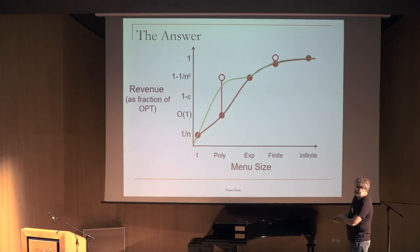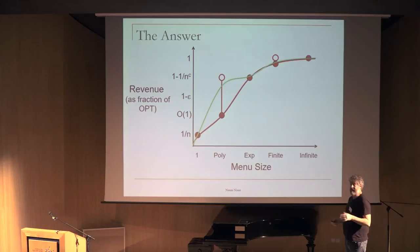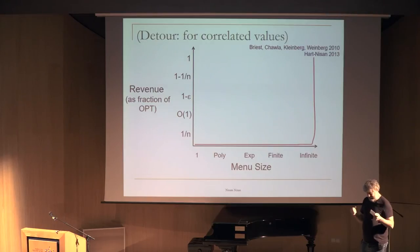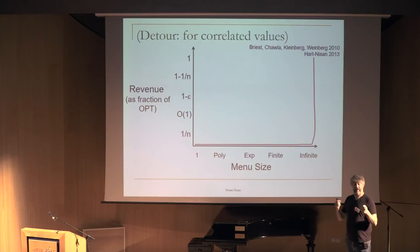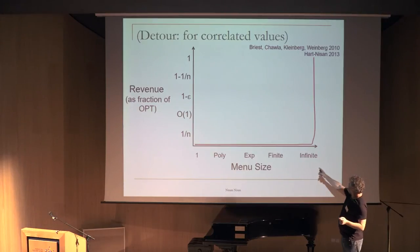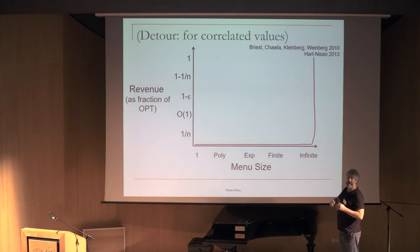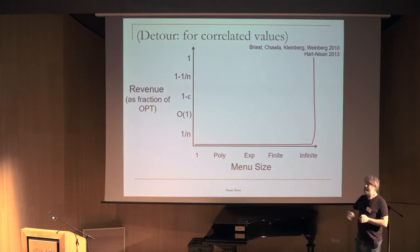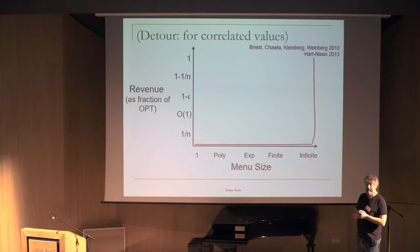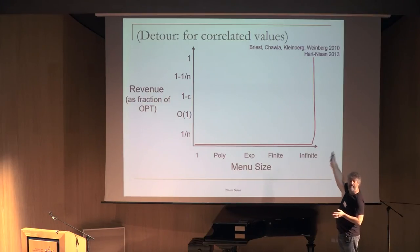It's not clear a priori that such a nice graph exists. If we slightly change the setting and allow the two item values to be correlated rather than independent, the situation changes drastically: with any finite menu you get zero fraction of optimal revenue, but with an infinite menu you get everything. So the nice graph only applies in the independent case.